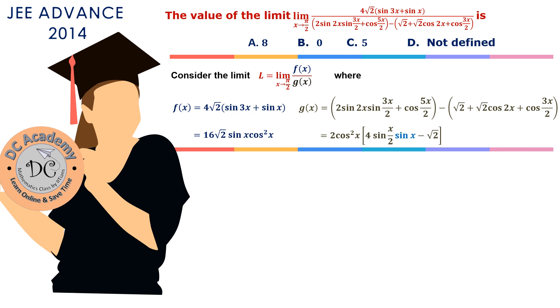We need to find the limit f(x)/g(x). So let's calculate f(x)/g(x), which equals 16√2 sin x cos² x divided by g(x). Now cos² x cancels from the denominator and numerator, and 16/2 = 8. Therefore, it can be written as 8√2 sin x divided by [4 sin(x/2) sin x - √2].